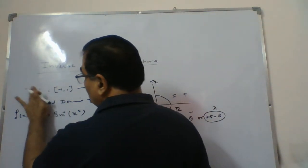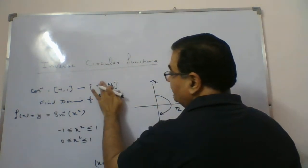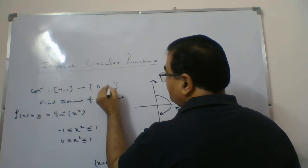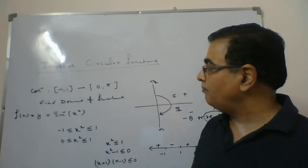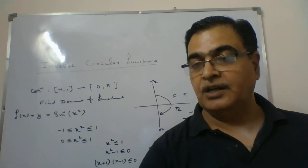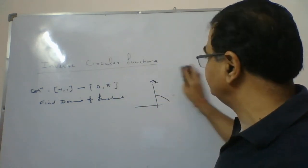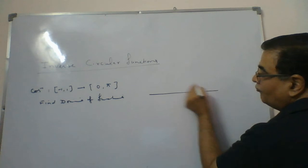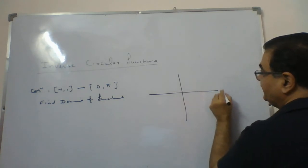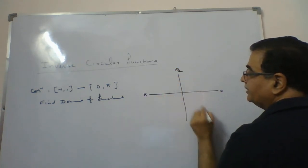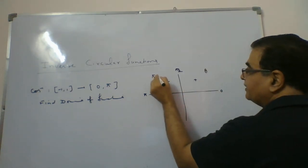Similarly, when we have the inverse cosine function, the domain is minus 1 to 1, and the range or co-domain is 0 to pi. Cosine is positive in the first half (0 to pi by 2), where the value is theta, and negative in the second half (pi by 2 to pi), where the value is pi minus theta.